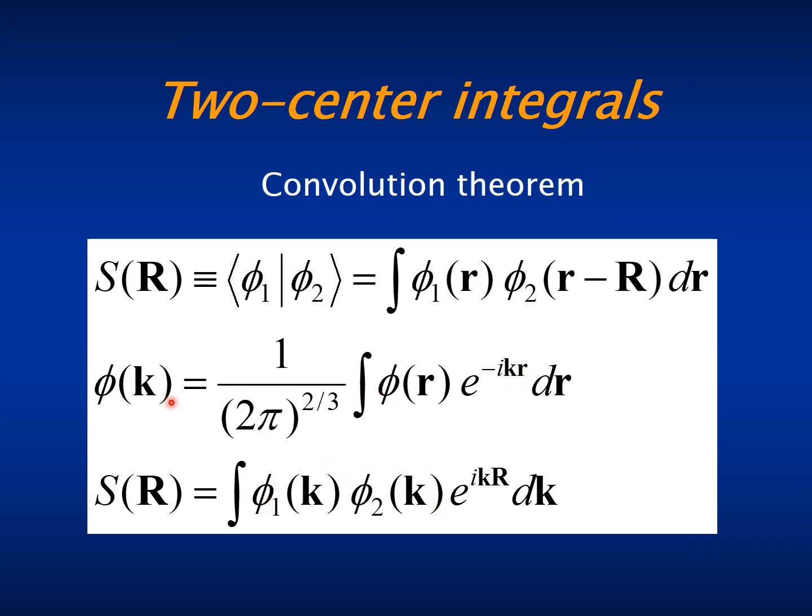So all we have to do is to Fourier transform the basis orbitals to reciprocal space, multiply them, and then Fourier transform back the product to real space, and this will give us the overlap at all distances R.